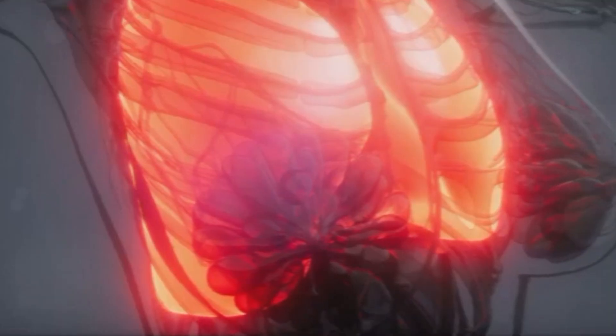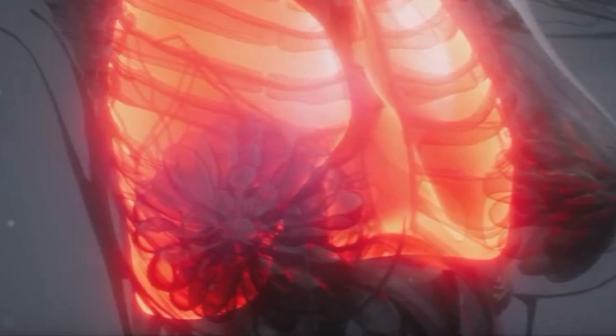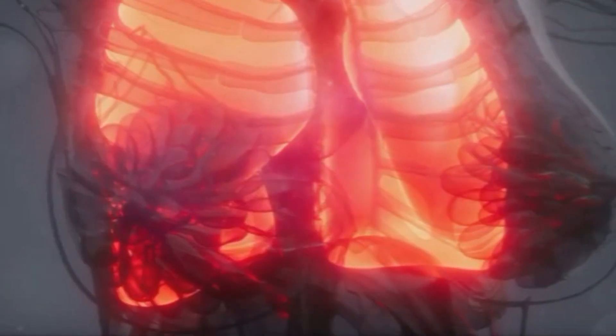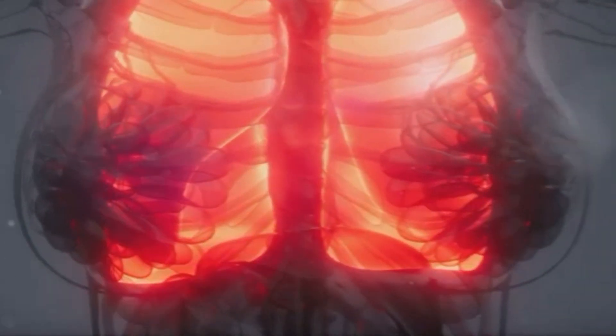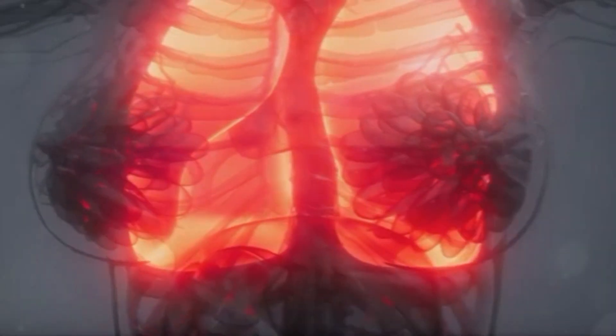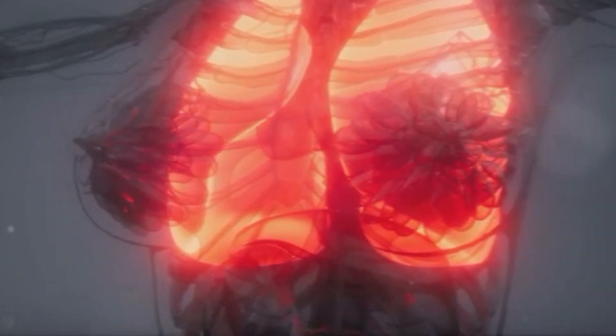When we breathe, air travels into our lungs through tubes called bronchi. These bronchi branch out into smaller tubes called bronchioles, which end in tiny air sacs called alveoli where gas exchange occurs.